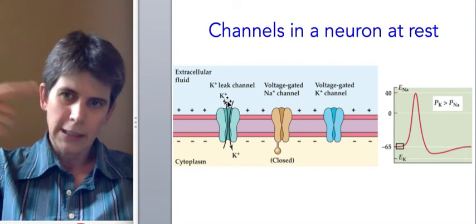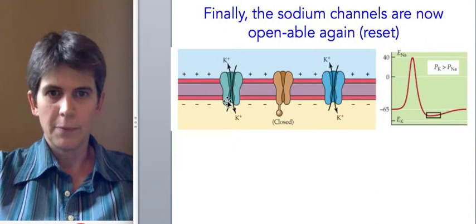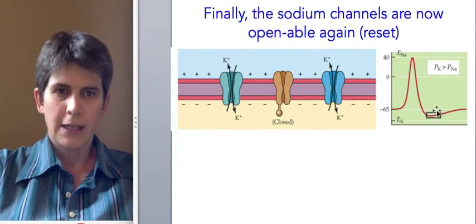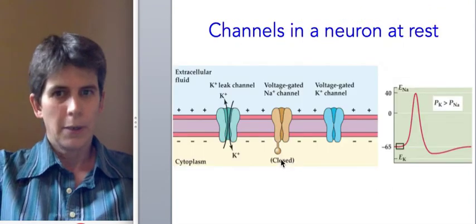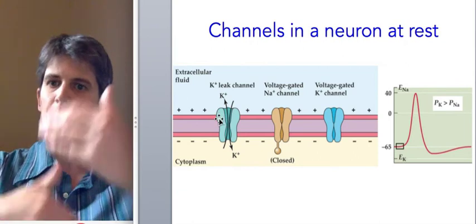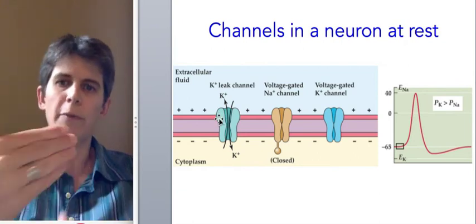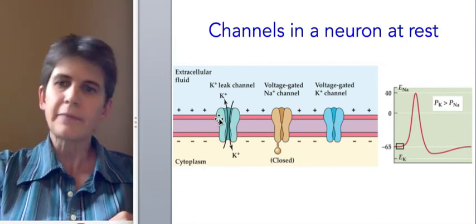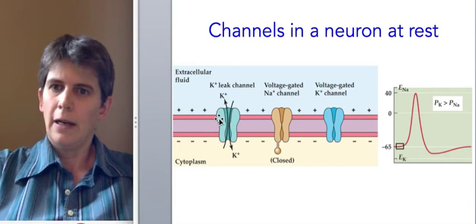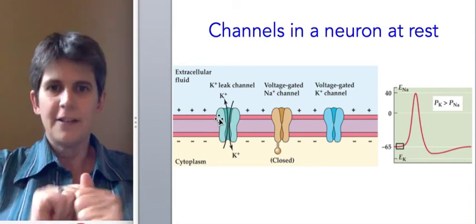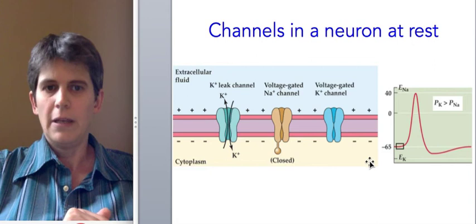If potassium can leave as fast as it wants, as on the previous slide, it can make the cell more negative. But at rest, only a few potassium channels are open and the rate of that movement of potassium out of the cell is just fast enough to make the inside of the cell negatively charged.